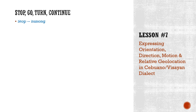How do we say stop, go, turn, continue? These are useful when traveling, even on foot with a group of people. When you say stop, you say hunong. Go is larga — this has a Spanish connotation. Turn is liko.